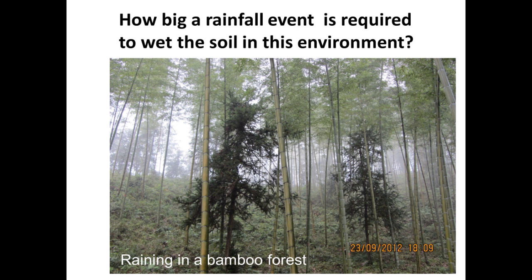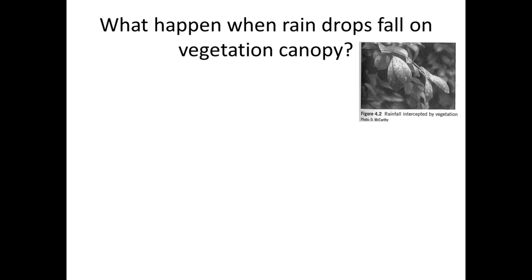You can't immediately wet the soil using the first rain drop, because you have canopy at least two levels, or maybe in some places three levels of canopy. The top level is bamboo, and then the second level in some areas you can see other needle-leaf trees, and then on the ground you have a lot of grass. So to answer this question, we need to know what happens when rain drops fall on this vegetation canopy.